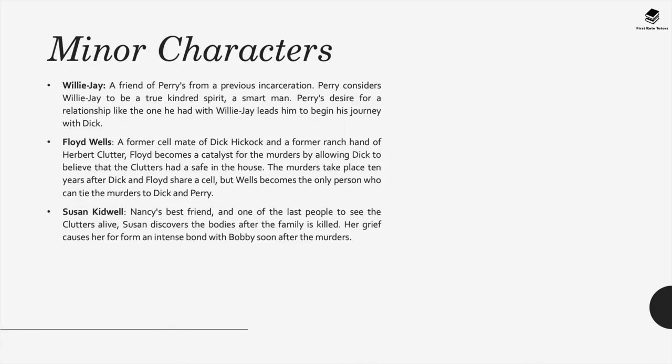Willie Jay is a friend of Perry's from his previous incarceration. Perry's desire for a relationship like the one he had with Willie Jay leads him to begin his journey with Dick. Floyd Wells is a former cellmate of Dick Hickok and a former ranch hand of Herbert Clutter. Floyd becomes a catalyst for the murders by allowing Dick to believe that the Clutters had a safe in the house. The murders take place ten years after Dick and Floyd shared a cell, but Wells becomes the only person who can tie the murders to Dick and Perry.